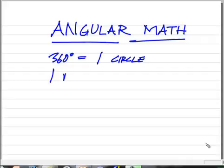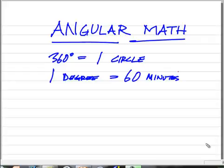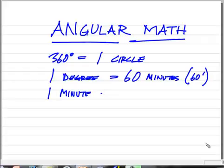One degree is divided into 60 minutes. When we make notation showing minutes, it is a simple dash or like an apostrophe. When we divide a minute further in this type of system, then we divide it into 60 seconds.